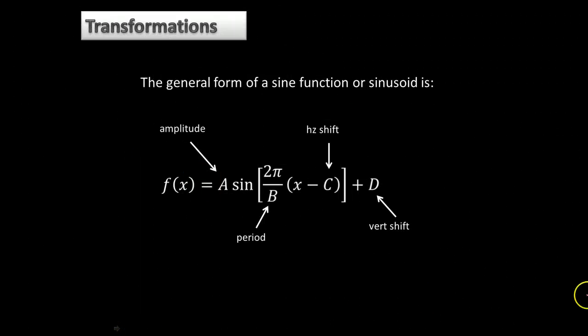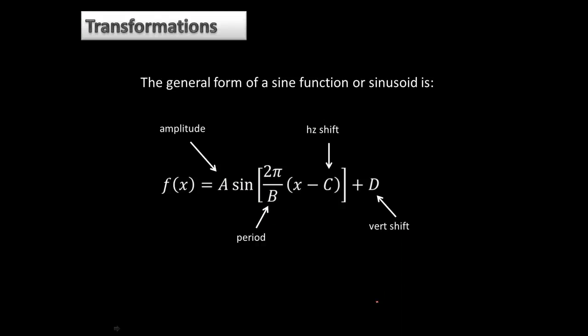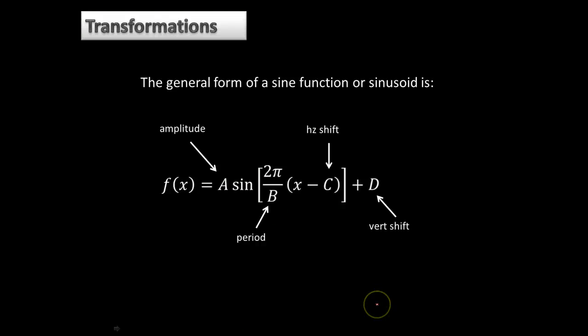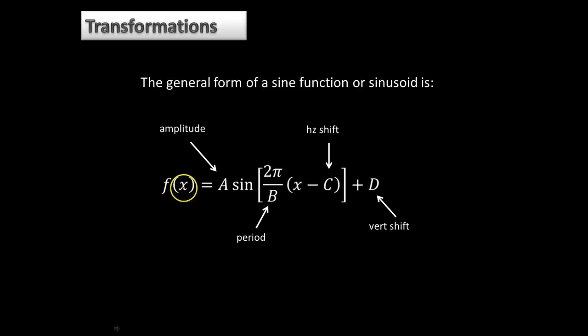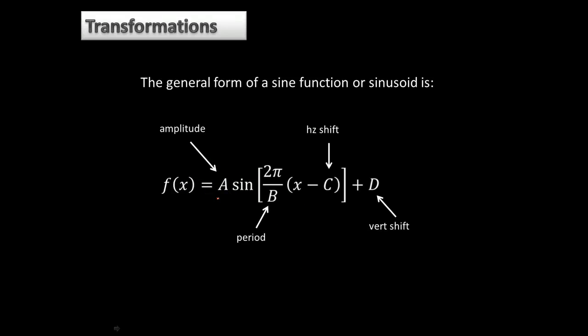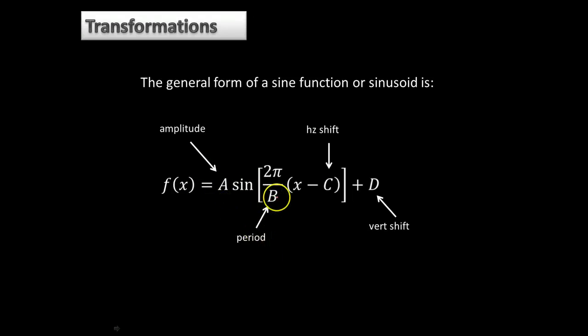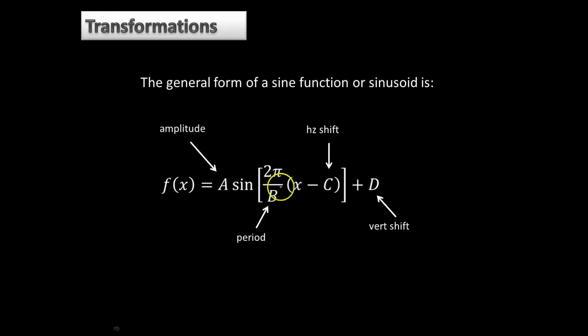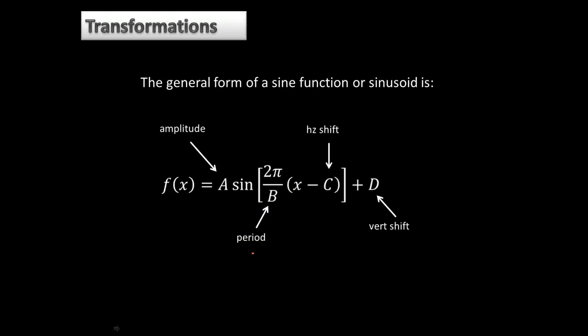The next thing we're going to talk about is transformation. So this is the general form of a sine function, which is referred to as a sinusoid. f of x is equal to - the number in front of the sine, the coefficient of the sine, that's the amplitude, and then inside those brackets, the number or the coefficient of the x is where we get our period from.